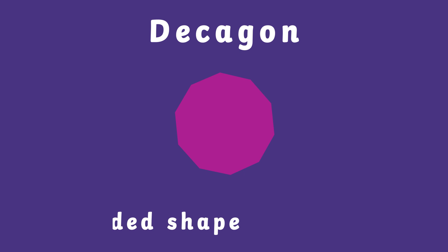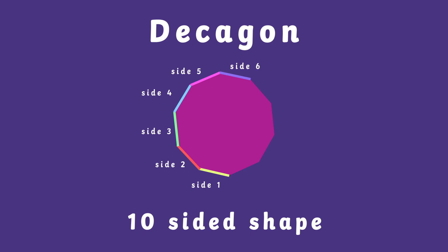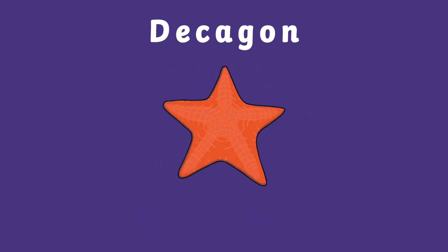Our last 2D shape is the decagon. This shape has ten sides. One, two, three, four, five, six, seven, eight, nine, ten. That is all the 2D shapes up to ten.